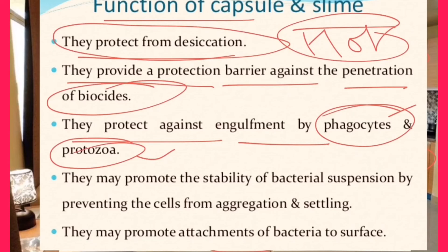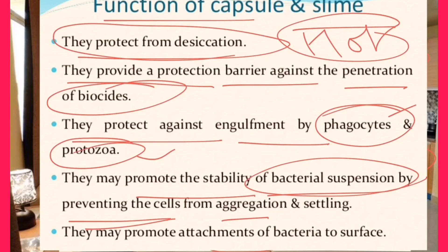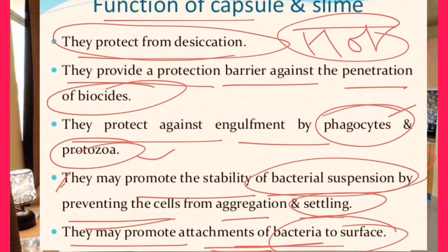Capsules and slime layers may also promote the stability of bacterial suspensions by preventing cell aggregation and settling. They are also responsible for promoting attachment of bacterial cells to surfaces. Under unfavorable conditions they play a very important role in bacterial attachment and settlement, allowing bacteria to pass through unfavorable conditions until favorable conditions return — similar to a hibernating state — thus protecting bacterial cells from undesirable situations.